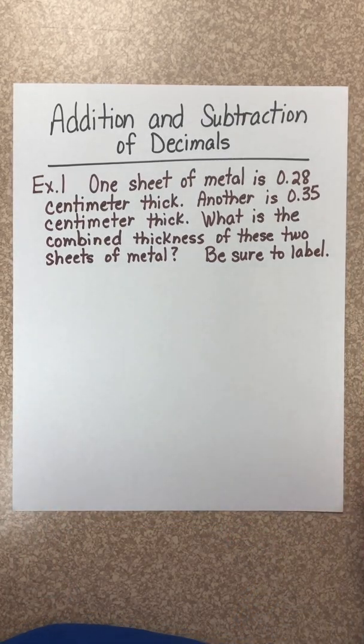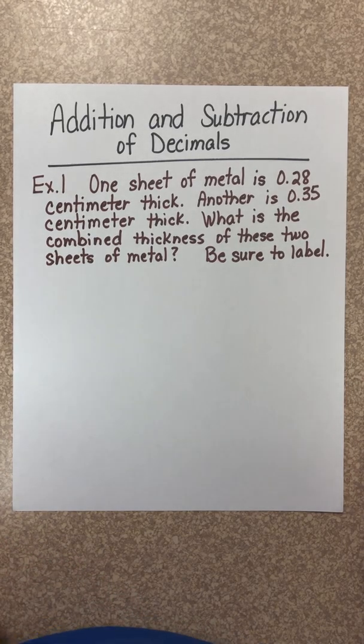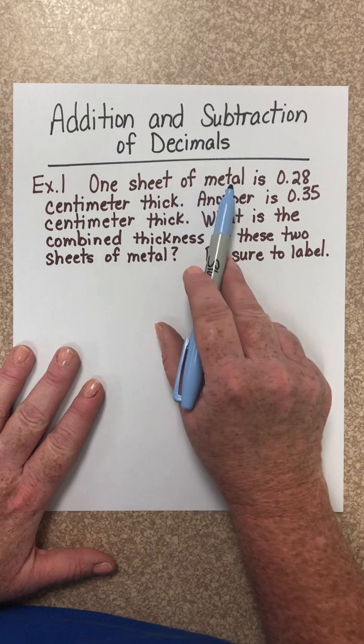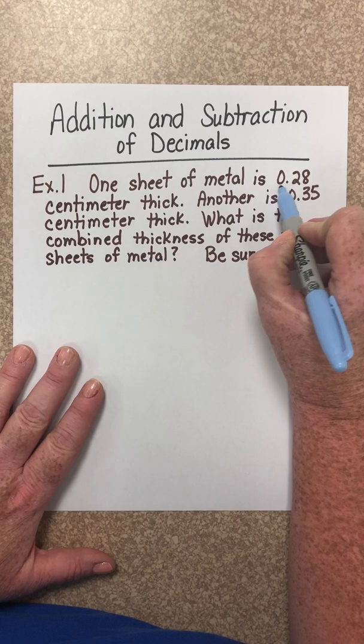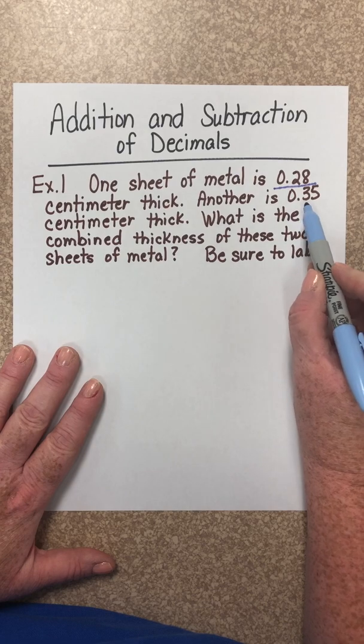Let's take our first example. One sheet of metal is 0.28 cm thick. Another is 0.35 cm thick. What is the combined thickness of these two sheets of metal? Be sure to label. Well first, let's go back and identify the numbers that are necessary in this problem. We do have one sheet of metal, but it tells us that that sheet is 0.28. Another is 0.35.